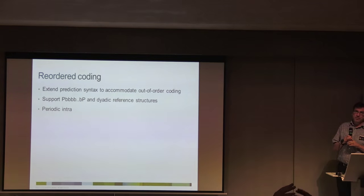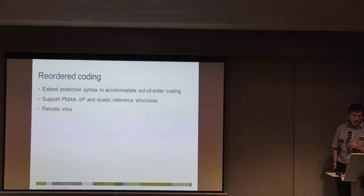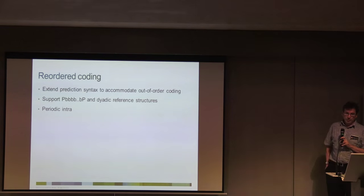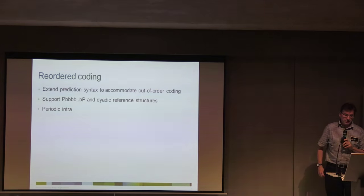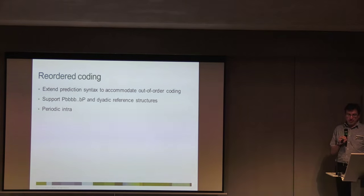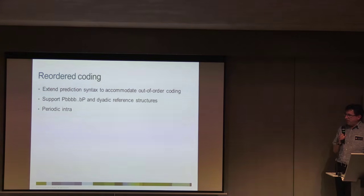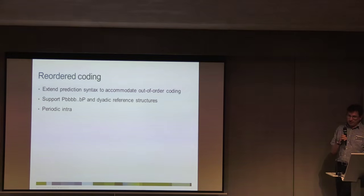We had support in the first release in July for reordered coding — you just have a frame number, send stuff out of order, and it works. You can support MPEG-2 style B-frames with P, B, B, B sequences, though not quite MPEG-2 because you can predict a B from another B. You can also have dyadic, i.e. hierarchical B structures. A periodic interval or just a single group — all those coding modes you'd expect are supported.